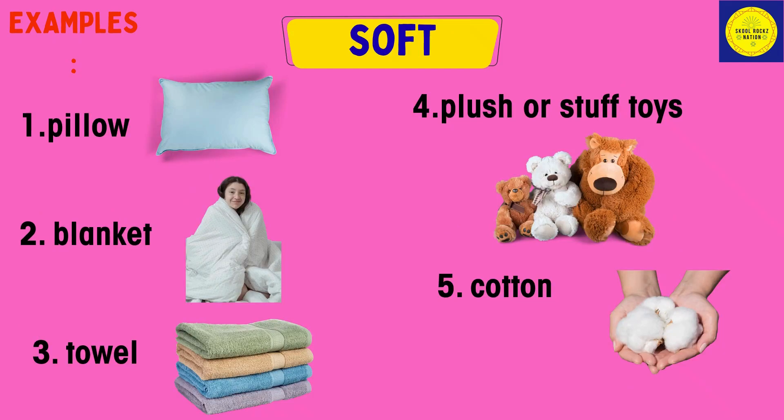Examples of soft objects: pillow, blanket, towel, plush or stuffed toys, cotton.